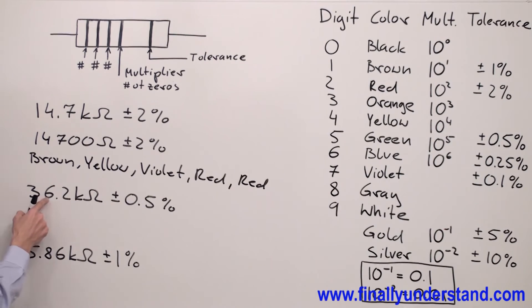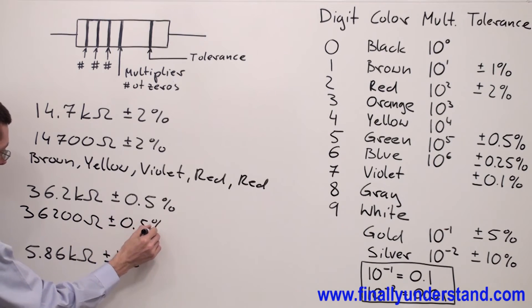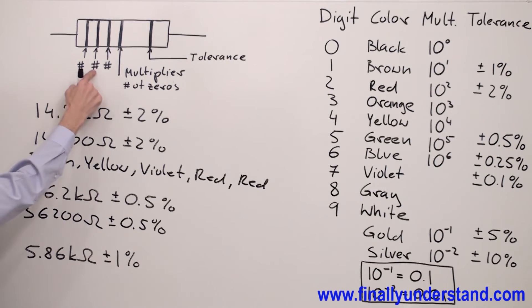I have 36.2 kilo ohms plus minus 0.5%. First, I have to rewrite this value in decimal notation. I have 36,200 ohms. 36.2 kilo ohms is 36,200 ohms plus minus 0.5%.